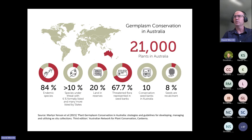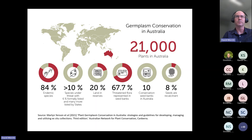Here's a snapshot of germplasm conservation across Australia. The work of the Australian Seed Bank Partnership complements some of the global targets that aim to protect plants in their natural habitat. Through our efforts, over two-thirds of the federally listed threatened flora in Australia are now represented in seed banks, and that's really been achieved over the past 10 years of hard work by the partnership.